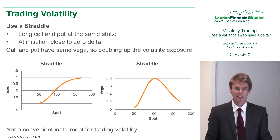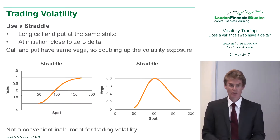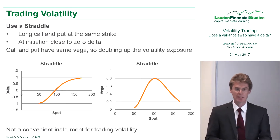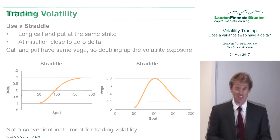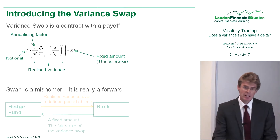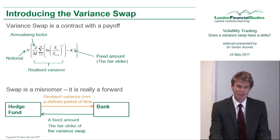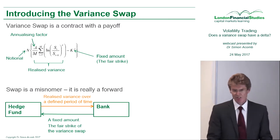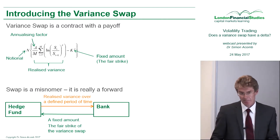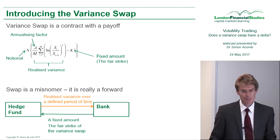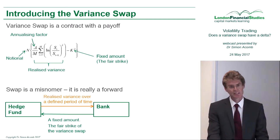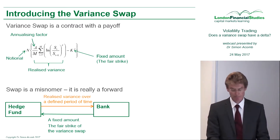You buy a call option and a put option at the same strike. If you take those call and put options and strike them to be at the money at initiation, for that purpose the contract called a variance swap was introduced. I've put the payoff of this variance swap at the top of this slide — it looks fairly messy, but actually it's really quite simple.